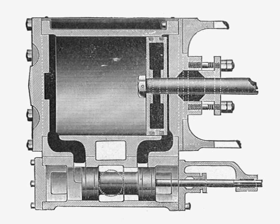Piston valves are one form of valve used to control the flow of steam within a steam engine or locomotive. They control the admission of steam into the cylinders and its subsequent exhausting, enabling a locomotive to move under its own power. The valve consists of two piston heads on a common spindle moving inside a steam chest, which is essentially a mini-cylinder located either above or below the main cylinders of the locomotive.